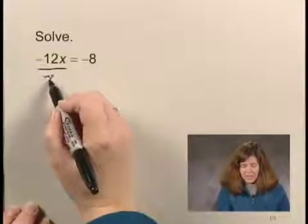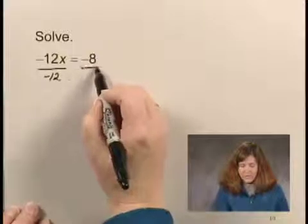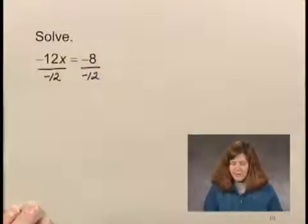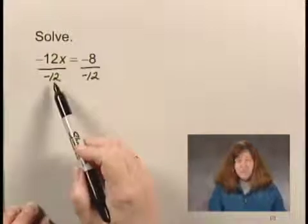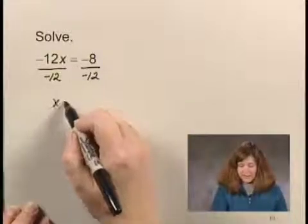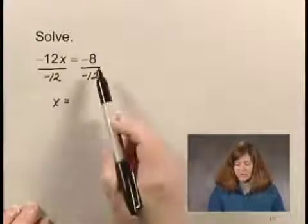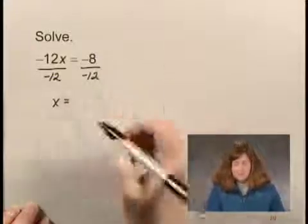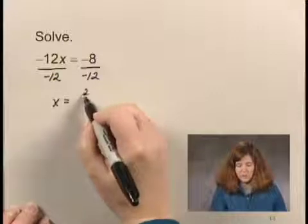Dividing by negative 12 on the left side, dividing by negative 12 on the right side. Negative 12 over negative 12 is 1, and 1 times x is x. And this equals negative 8 over negative 12, which simplifies to 2 thirds.